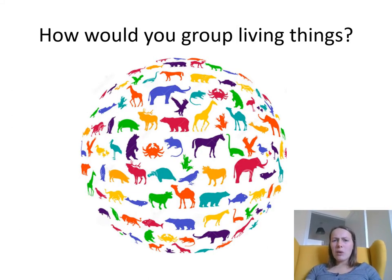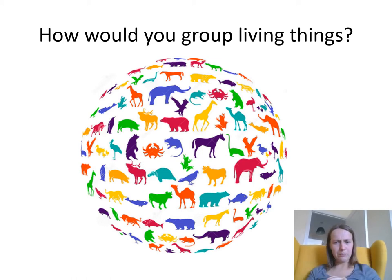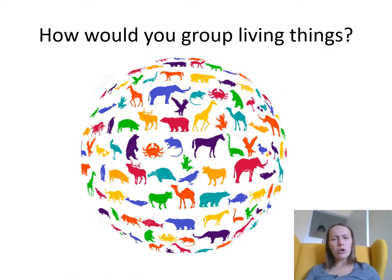How would you group living things? What matters when you think about what groups an animal would go into? What are you thinking about? How many legs? What colour it is? Big or small? What groups would you use?